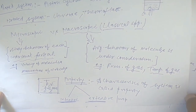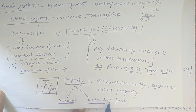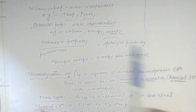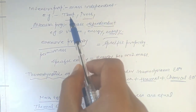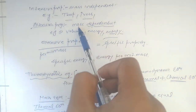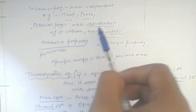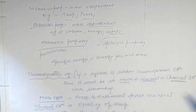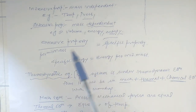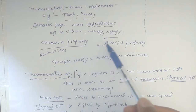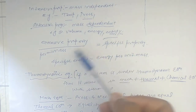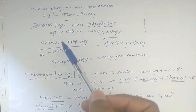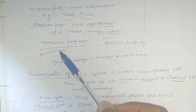Properties are categorized into two parts: intensive properties and extensive properties. Intensive properties are mass-independent — for example, temperature and pressure. Extensive properties are mass-dependent — like volume, energy, and entropy. When any extensive property is studied per unit mass, it is called a specific property. For example, energy per unit mass is specific energy; entropy per unit mass is specific entropy.